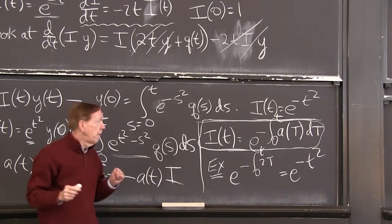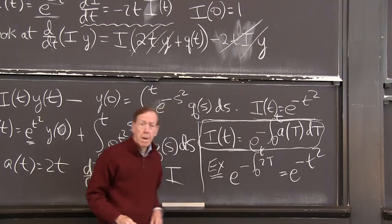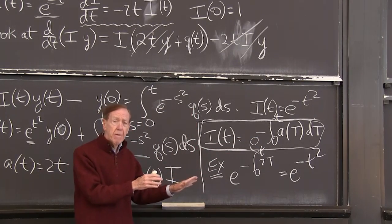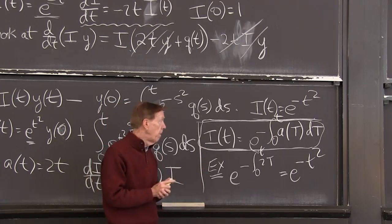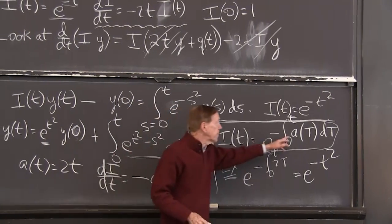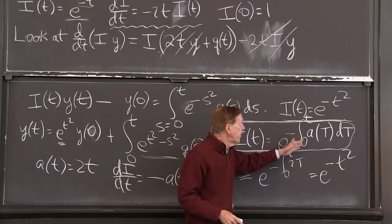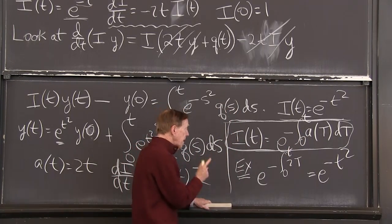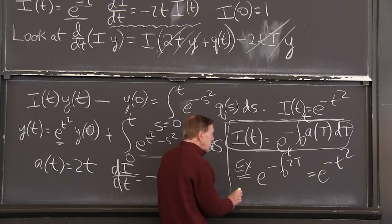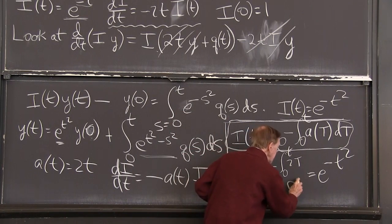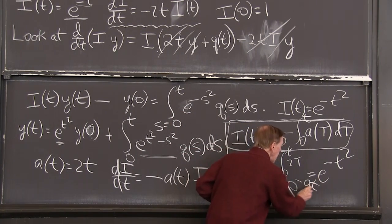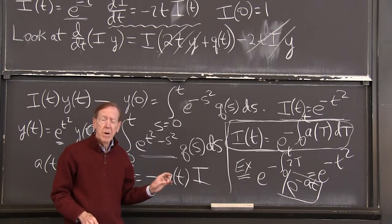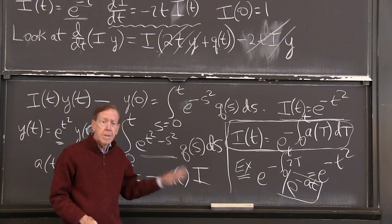And finally, finally, if a is a constant, which is the most common case, the only case we've had until this video. If a is a constant, then the integral of a from 0 to t is just a times t. So number one example, number 0 example, would be e to the minus a t. That would be the correct integrating factor if we had constant a.